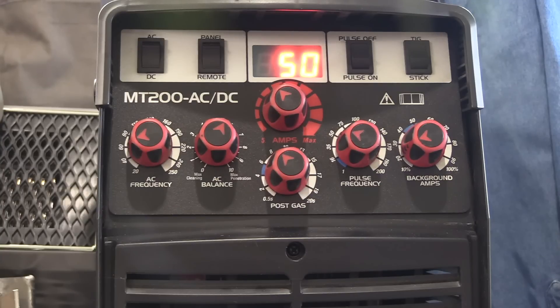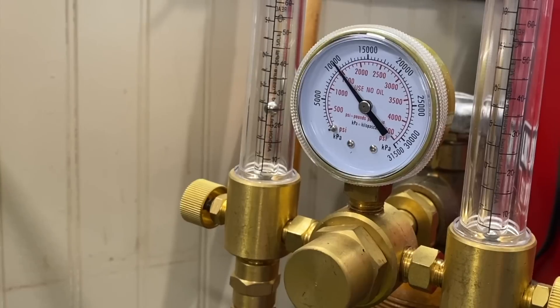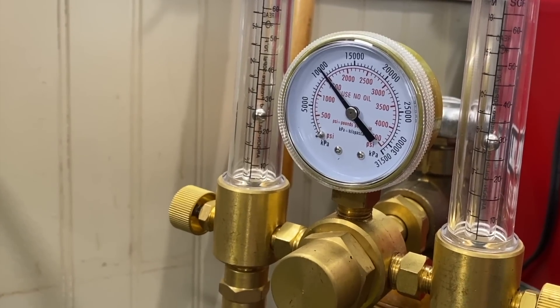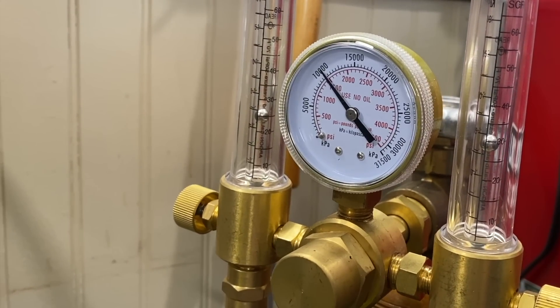I'm going to weld this piece in the horizontal position today. I'm setting the machine on 50 amps. I'm using a dual flow meter and I've got the purge set on about 15 CFH. I've got the cup set on about 30.